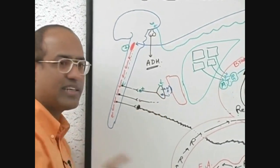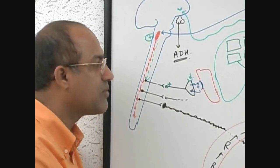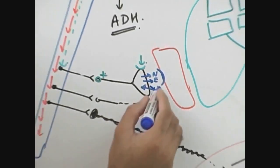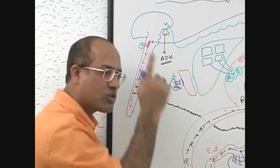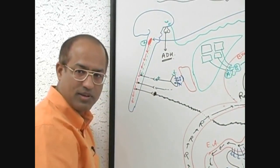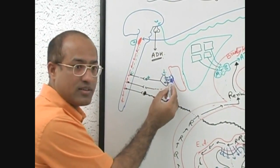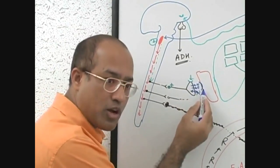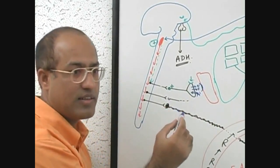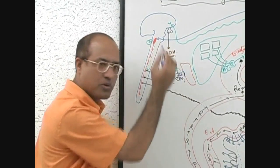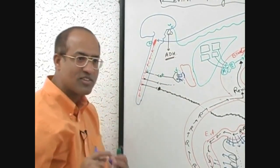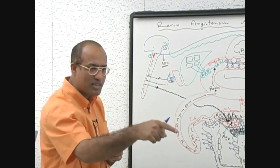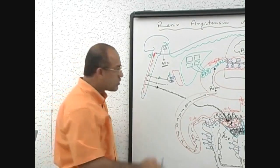Now what angiotensin-2 will do here? Angiotensin-2 has receptors here also. It will stimulate the nerve ending in such a fashion that the release of norepinephrine will be increased, and reuptake of norepinephrine will be reduced. So the amount of norepinephrine present in this area is increased. If the nerve ending under the direction of angiotensin-2 is releasing more norepinephrine and not recapturing it, then the amount of norepinephrine present in this synapse is more.